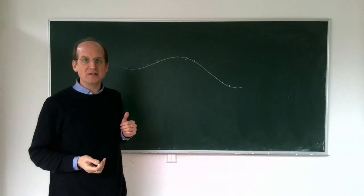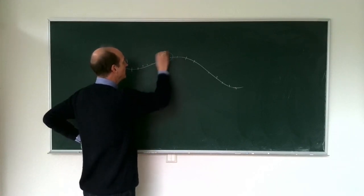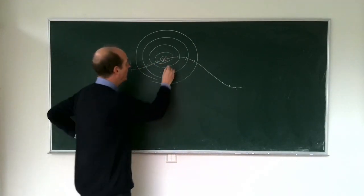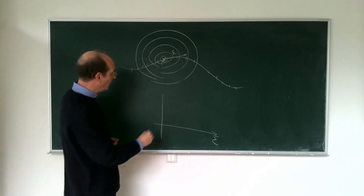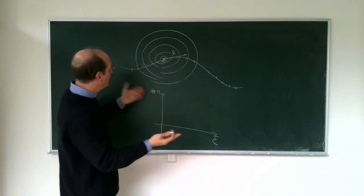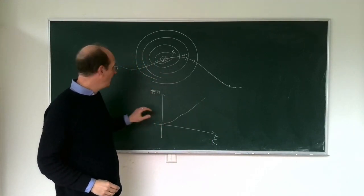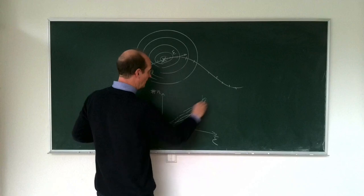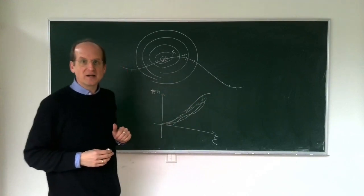How could we estimate that from data? We take one data point and draw epsilon balls around it and count the number of points inside. All these balls have a certain radius called epsilon. We can plot the size of the ball versus the number of data points in it, and we would expect this to grow - the larger the ball, the more points it will contain. We can do this for every data point, generating lots of these curves, and from these curves we can read off the dimensionality.